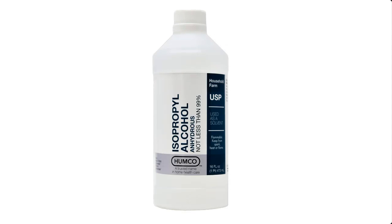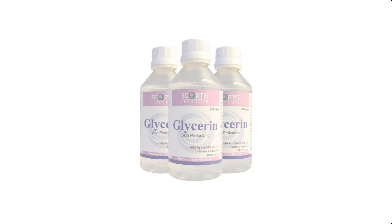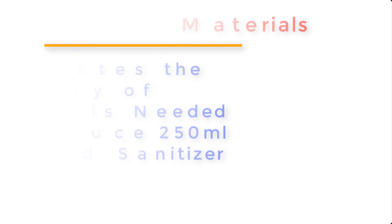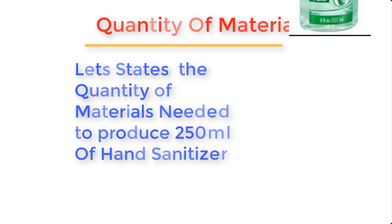These are isopropyl alcohol, hydrogen peroxide, glycerin, and distilled water. Now let's state the quantity of materials needed to produce about 250 ml of hand sanitizer.